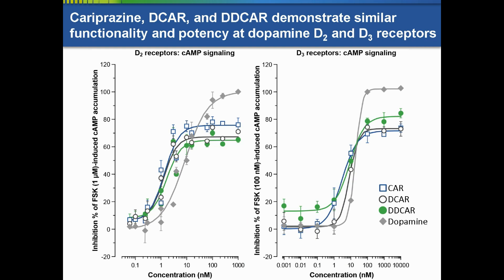Cariprazine, D-car, and D-D-car perform similarly as partial agonists in vitro, as measured by cyclic AMP accumulation in CHO cells expressing human dopamine D2 or D3 receptors. They also perform similarly as partial agonists at serotonin 5-HT1A receptors and as antagonists at serotonin 5-HT2B receptors.